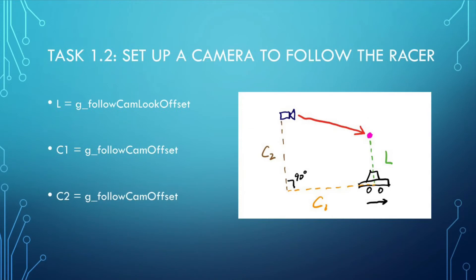In this task, it is required to set the position and the view target of the camera to ideal coordinates to facilitate game visuals. The position of the camera determines where the camera would be placed, while the view target of the camera determines the specific point that the camera would be aiming at.